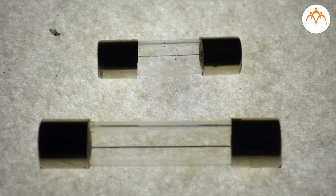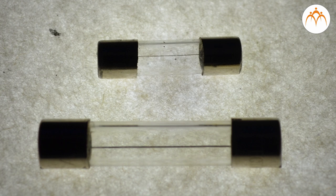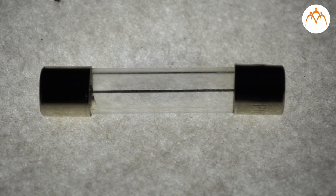The fuse works on the principle of the heating effect of electric current. It is made up of thin strip or strand of metallic wire with non-combustible material which acts as a casing. This strip is made up of aluminum, copper, or zinc and is connected between the ends of the terminals. Fuse is always connected in series with the electrical circuit.